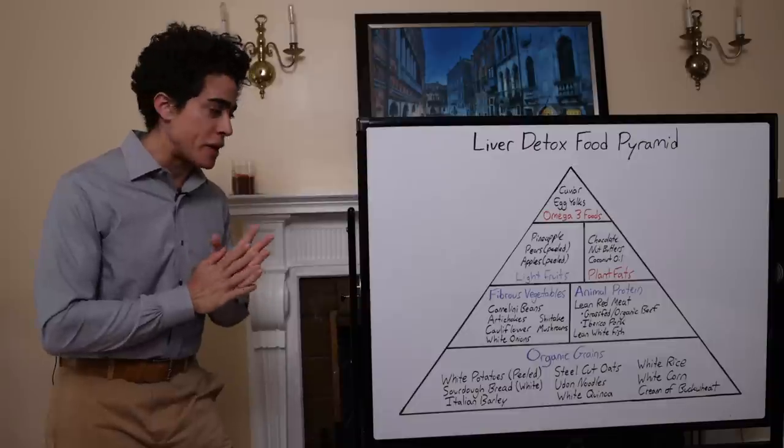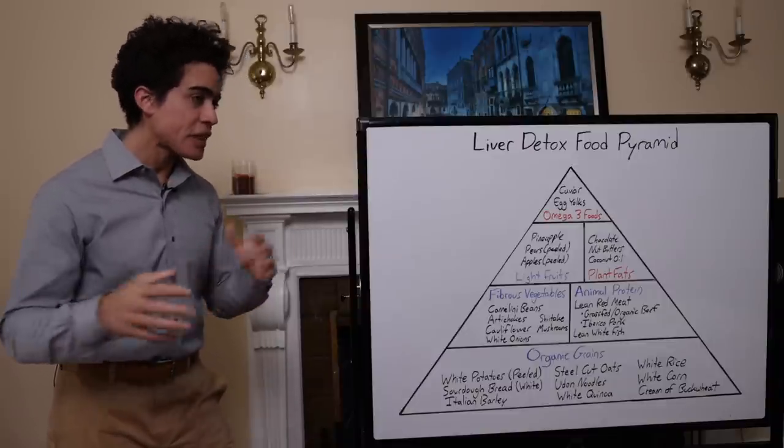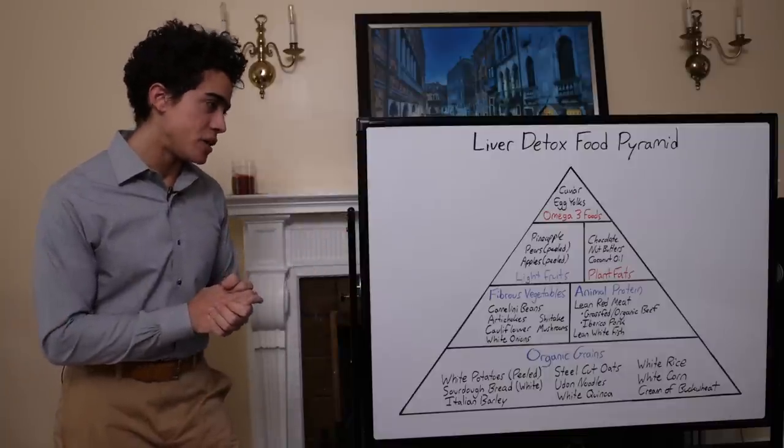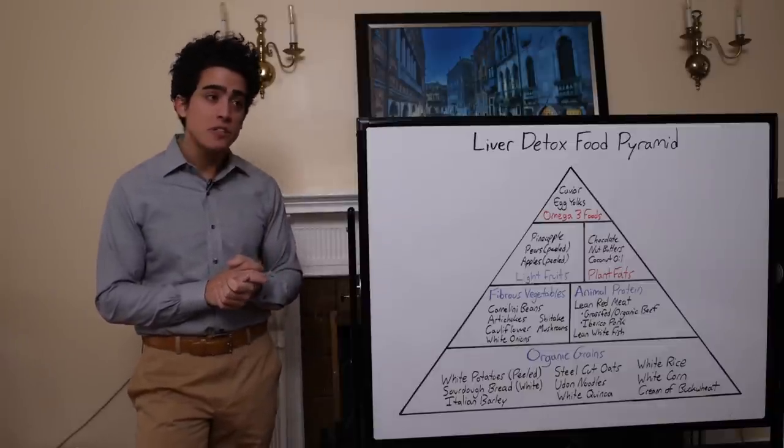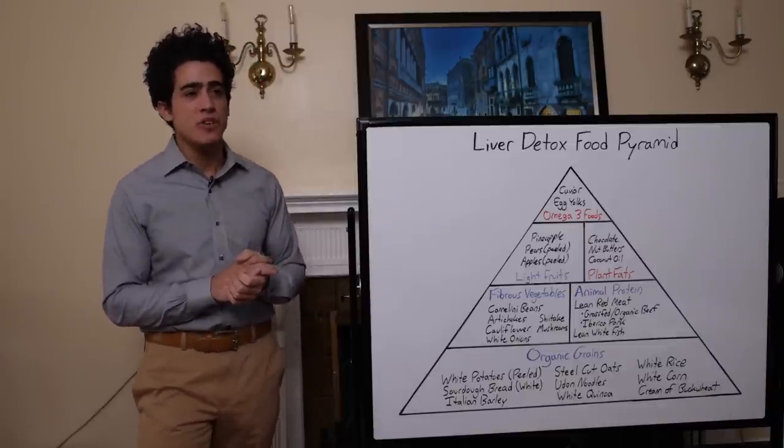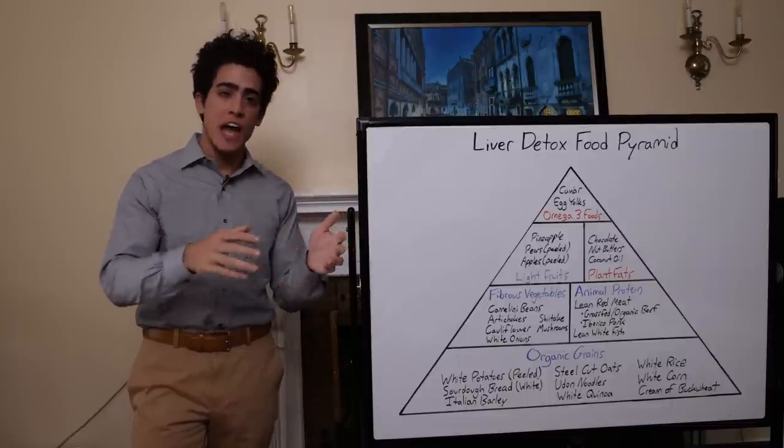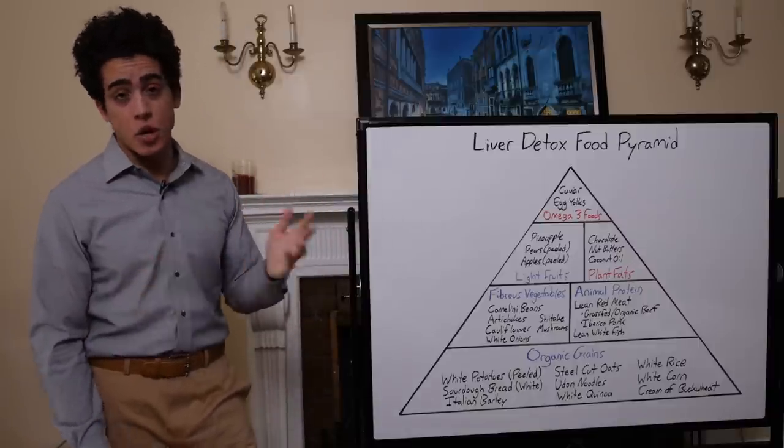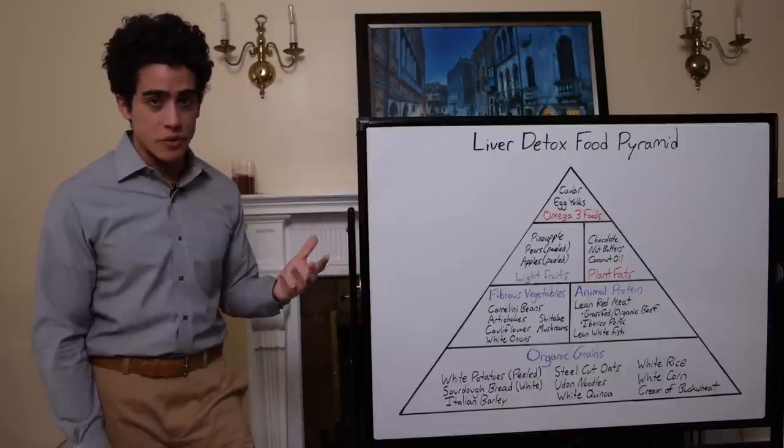There's a lot of issues with chicken from an allergen perspective so I do shy away from chicken. You could also have lean white fish like cod or halibut. There's definitely a pollution concern with those fish but the pros of having lean white fish are that it's not as high in iron, basically has no iron because it's white fish, which is a lot easier on the liver.